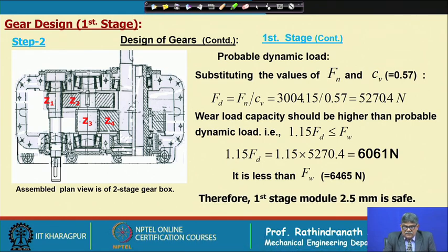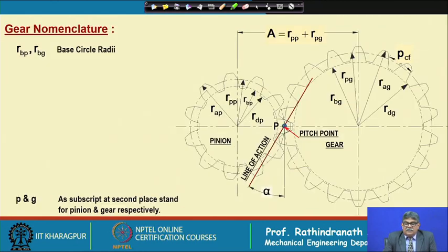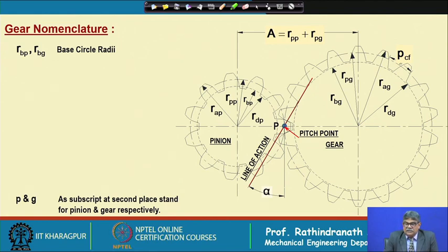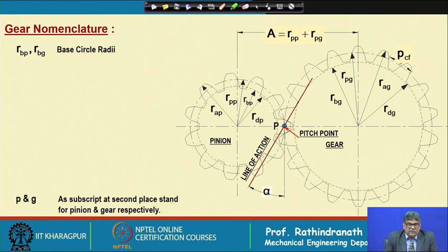In this case the first-stage module of 2.5 mm is safe and satisfactory, but we will face another problem when we select the bearing. Let us first look at what major dimensions need to be decided once the module is calculated. The base circle can be calculated from established relationships and will remain fixed.